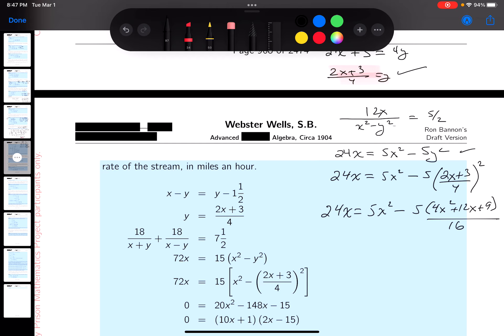I can multiply both sides by 16 now. Let's see, 80X squared minus 20X squared minus 60X minus 45.